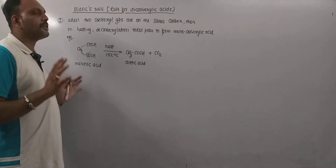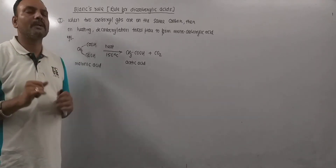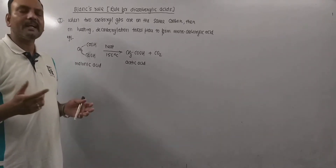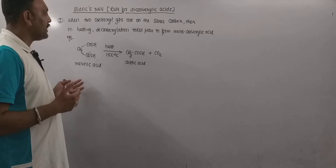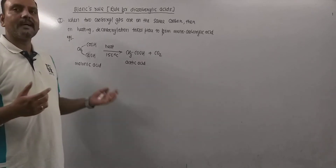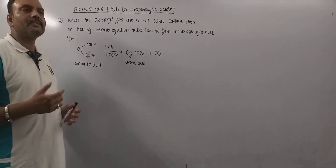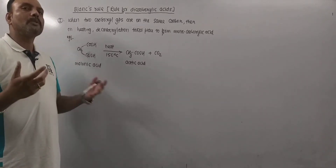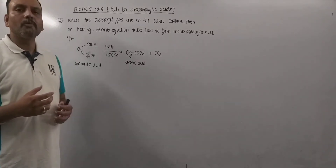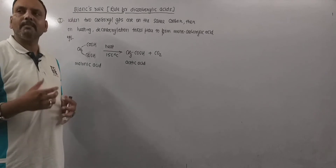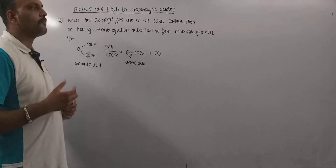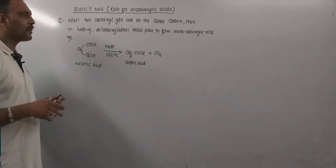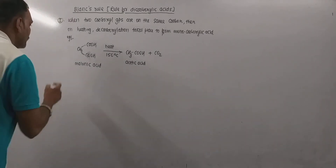So this is the very first point of Blank's Rule: dicarboxylic acids with both carboxyl groups on the same carbon undergo decarboxylation to give monocarboxylic acid.